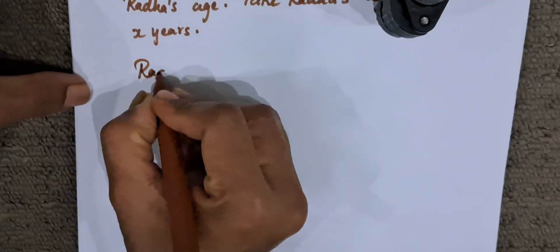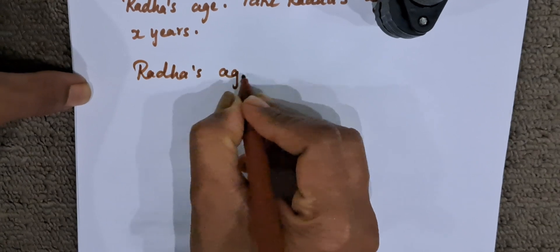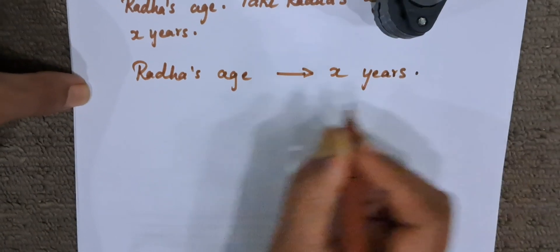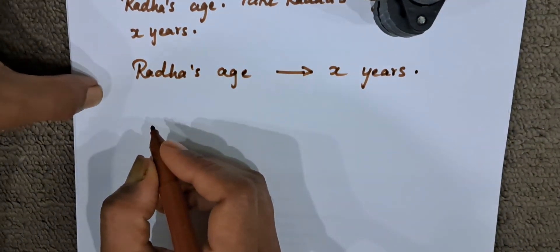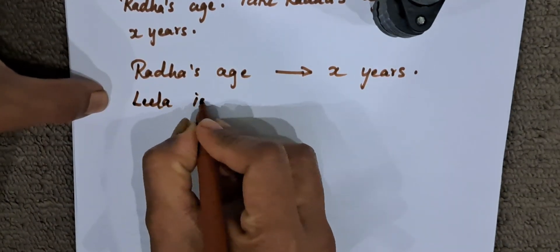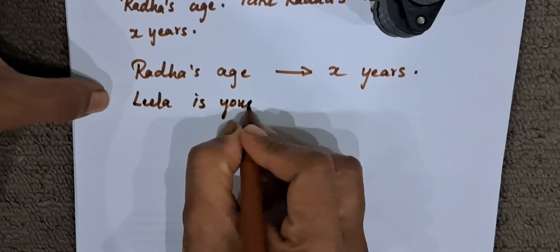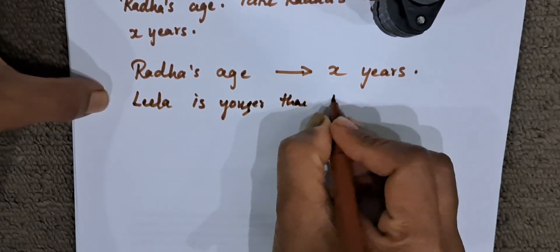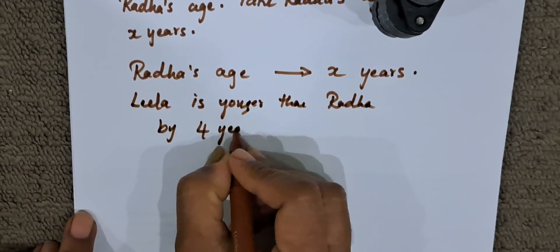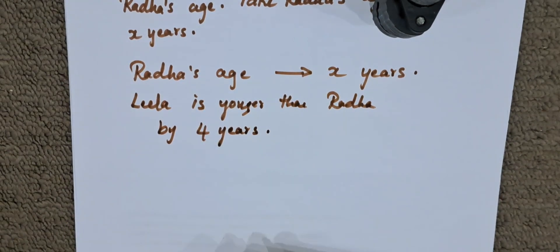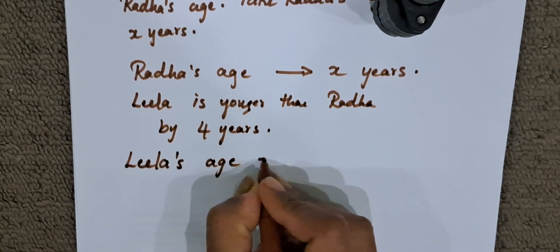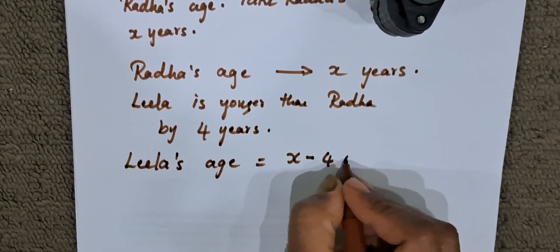So Radha's age is X years. They are asking us how to write Leela's age in terms of Radha's age. Leela is younger than Radha by 4 years. So how do we write in terms of X? It's very simple — Leela's age is equal to X minus 4 years.